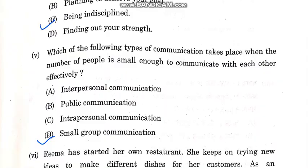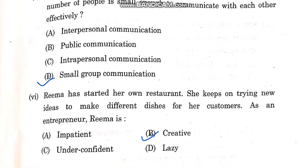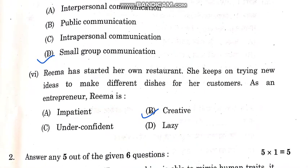Which of the following type of communication takes place when the number of people is small enough to communicate with each other effectively? The correct answer is small group communication.